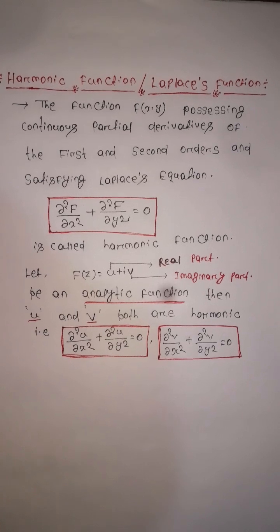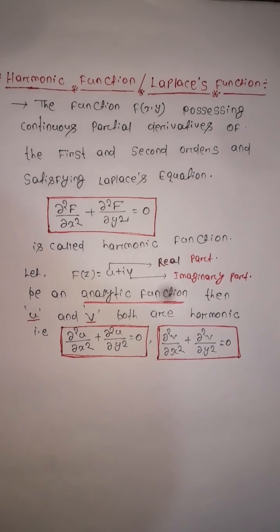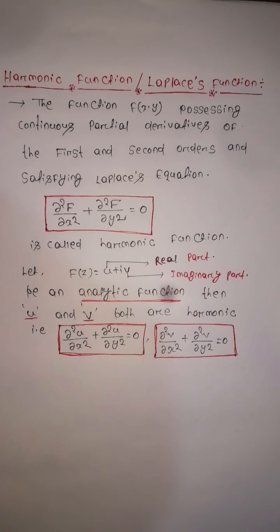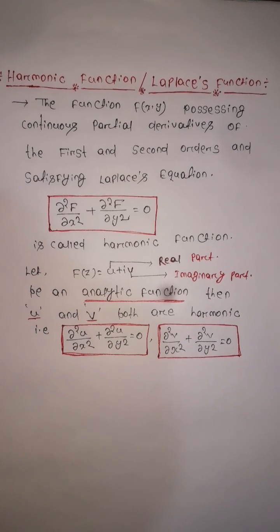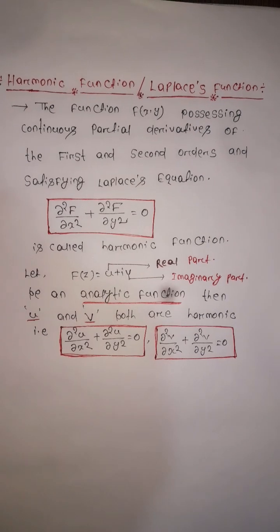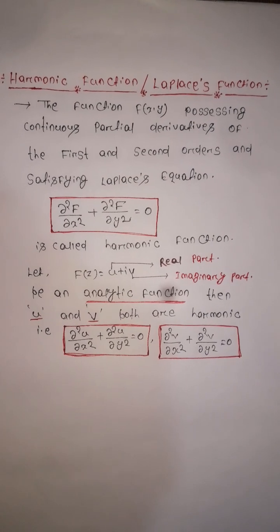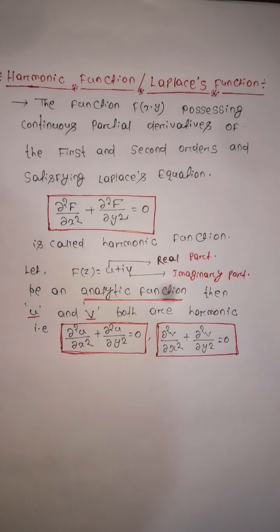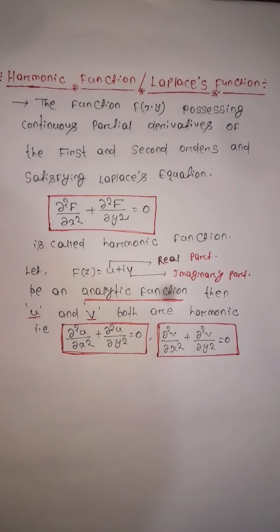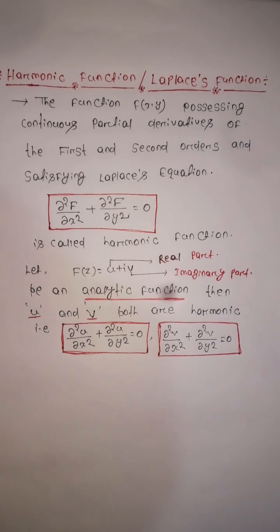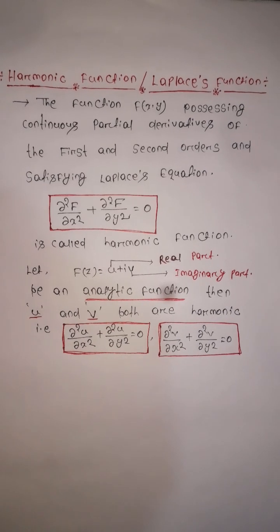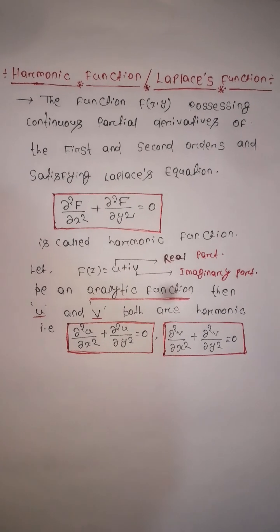If f(z) is analytic, then u and v both satisfy the harmonic equations: del squared u / del x squared plus del squared u / del y squared equals zero, and del squared v / del x squared plus del squared v / del y squared equals zero.